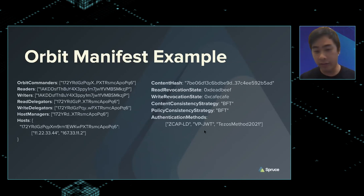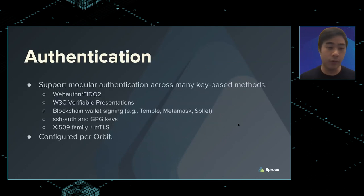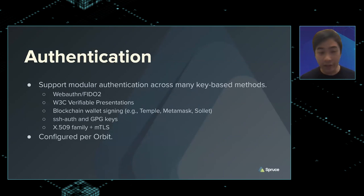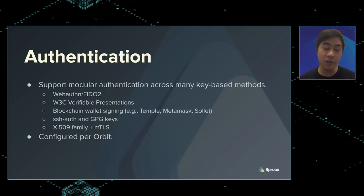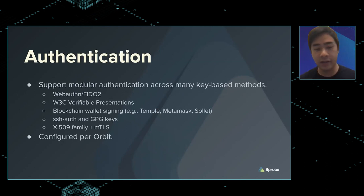We also have different authentication methods, including W3C verifiable presentations and blockchain-specific ones. We want to support WebAuthn, FIDO2, and blockchain wallet signing — so any time you can sign something with a blockchain wallet, you can build an authentication method out of that. We're also looking at SSH auth, GPG keys, and even enterprise X.509 and mutual TLS, being able to configure these per orbit so it's really tailored to the use case.